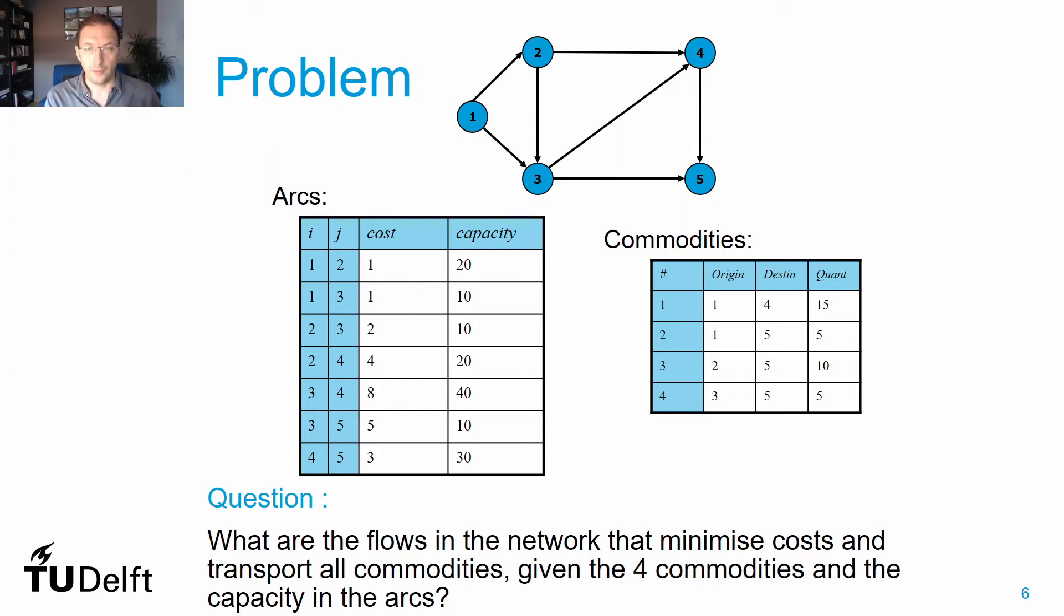To understand the problem, let's look at a specific toy example where we have a network with five nodes and seven arcs, and we want to transport four commodities. The information of arcs and commodities are presented in two tables. The goal is to determine what flows in the network will minimize costs of transporting all four commodities, given the arc costs and capacities.